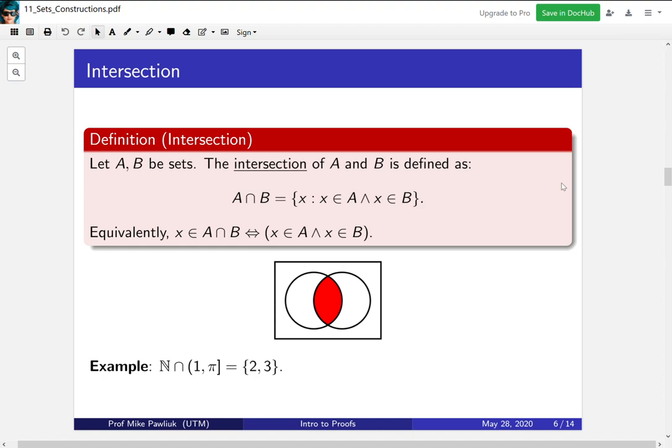So the intersection looks like this represented by a Venn diagram. The circle on the left is A, the circle on the right is B, and so the red part is the stuff in the middle, that's what's in the intersection.